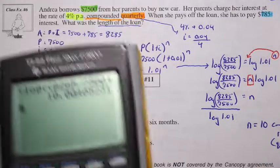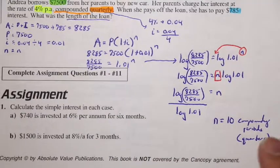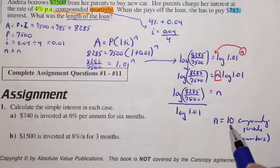So how long is it in years then? What is the length of the loan? 10 compounding quarters, or 10 compounding periods. So 10 quarters.